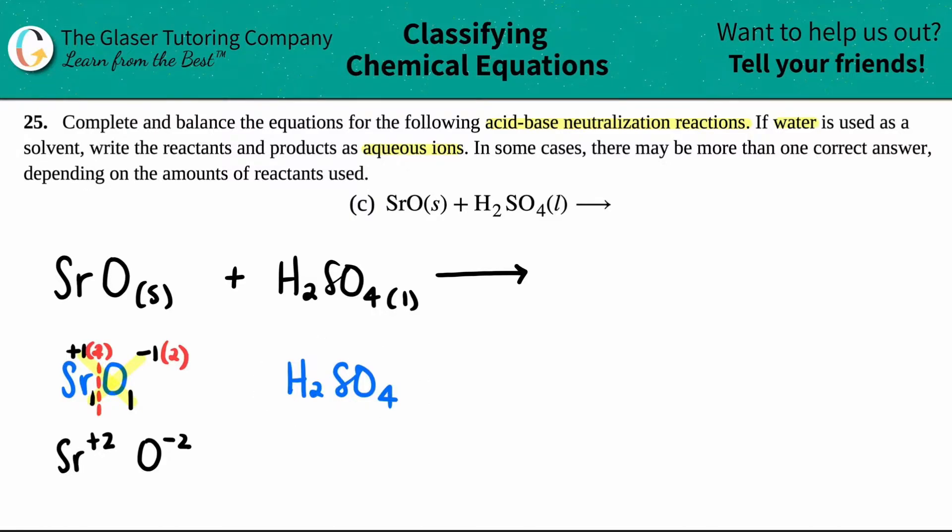I had to multiply the plus one times two, but whatever I do, I got to do to the other side. So now strontium is a plus two charge, and oxygen was a negative two. That makes sense. Let's do the same for sulfuric acid. I noticed that sulfate is in here, and polyatomics never break up. I have to keep my polyatomic. That's why you got to memorize your polyatomics.